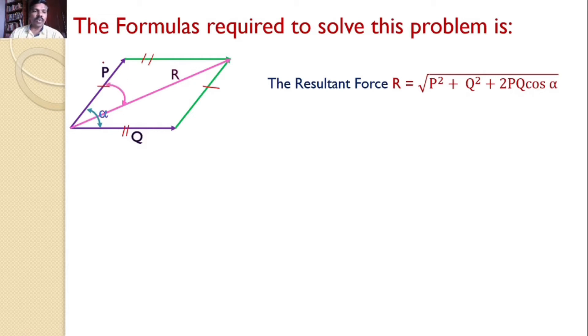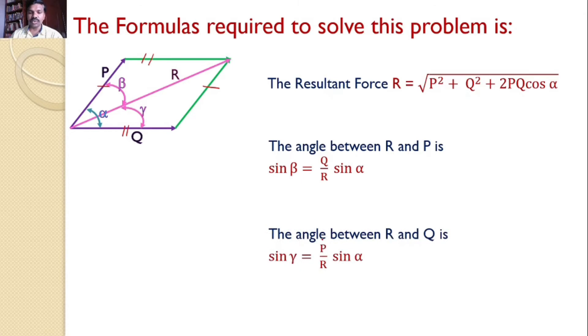Let the angle between one of the force P and the resultant force R is beta. And this beta is given by the equation sin beta equals Q by R into sin alpha. Similarly, let the angle between the resultant force and the force Q is gamma.